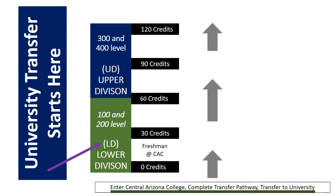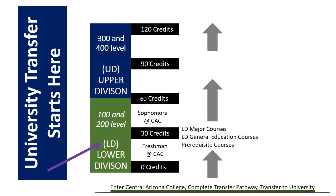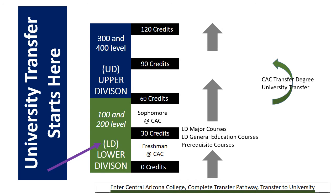The normal full-time load for a university-bound student is 15 credit hours per semester. Once 30 credit hours have been completed, which takes two semesters, you are classified as a sophomore. Your selected CAC transfer pathway is designed to fill lower division major, general education, and prerequisite courses for your intended university bachelor's degree. If you are completing an Associate of Arts or an Associate of Science degree, you will most likely transfer to the university after completing the required 60 to 64 credit hours. There are other pathways to transfer embedded in some of CAC's Associate of Applied Science degrees, along with a few other transfer options.